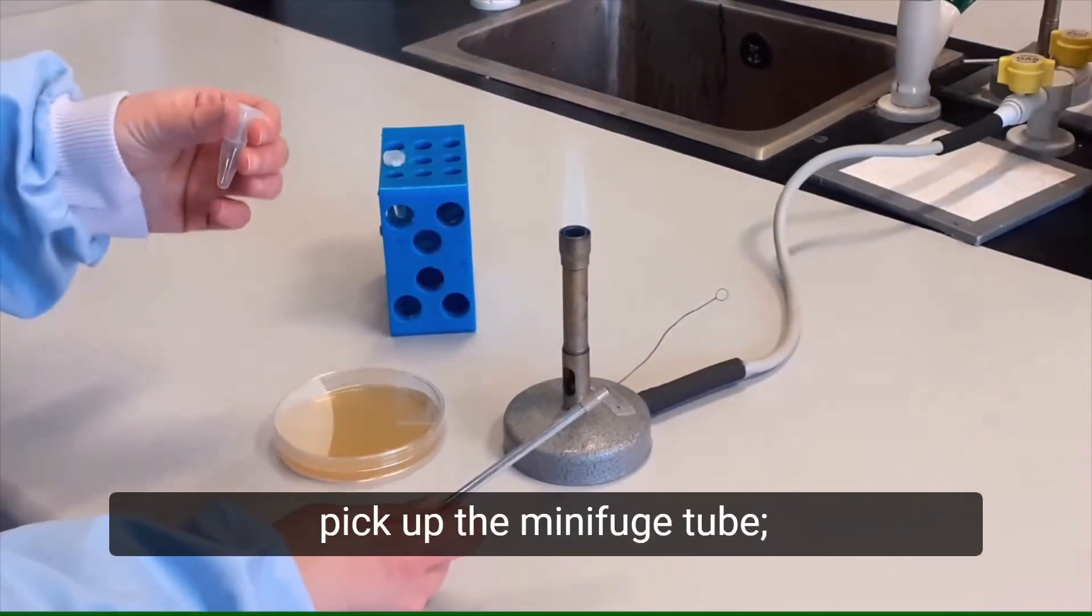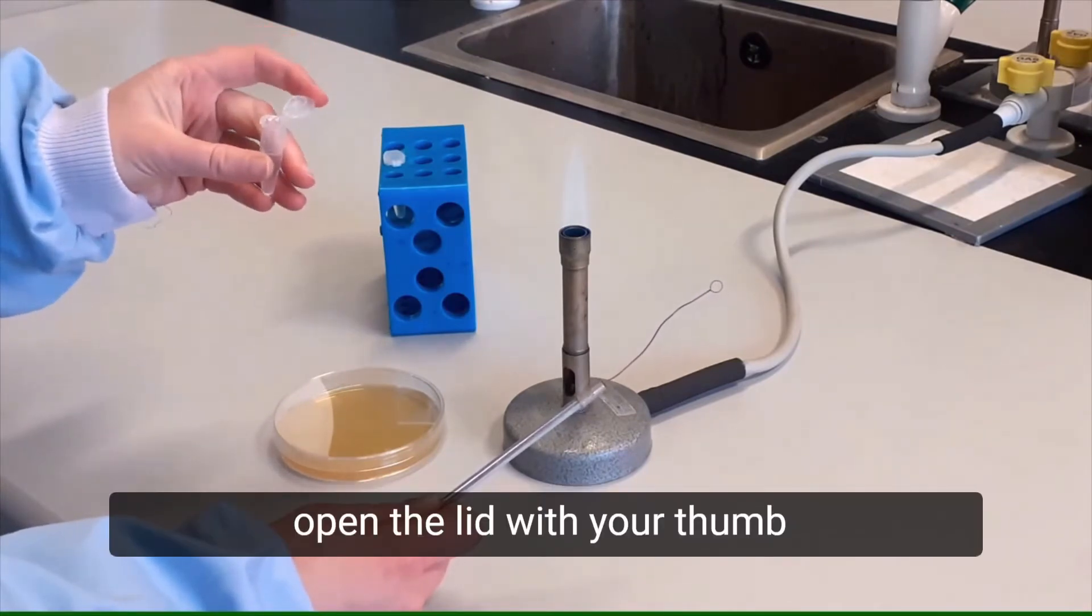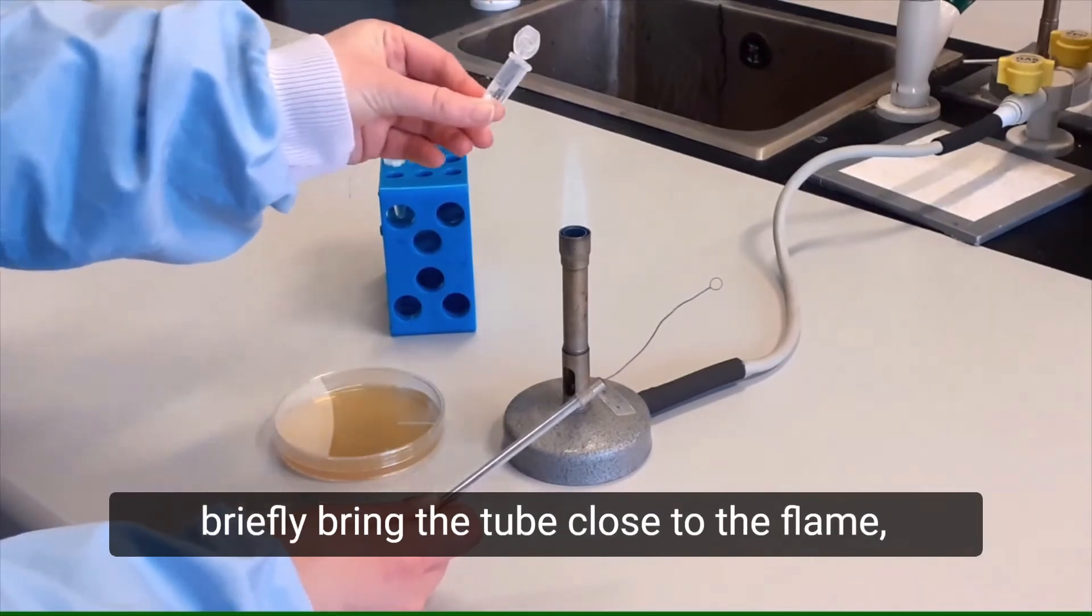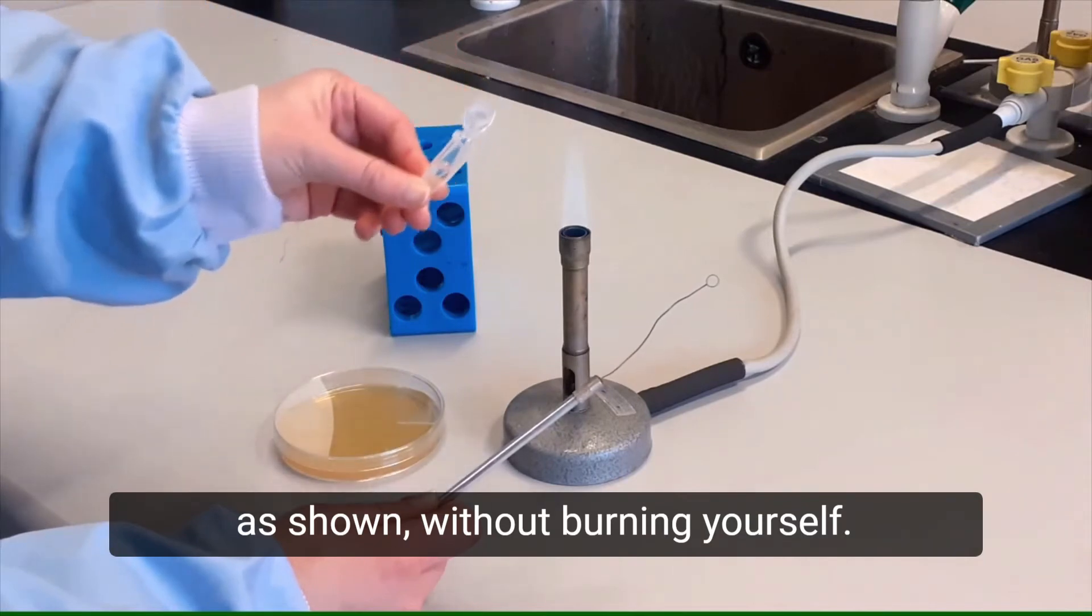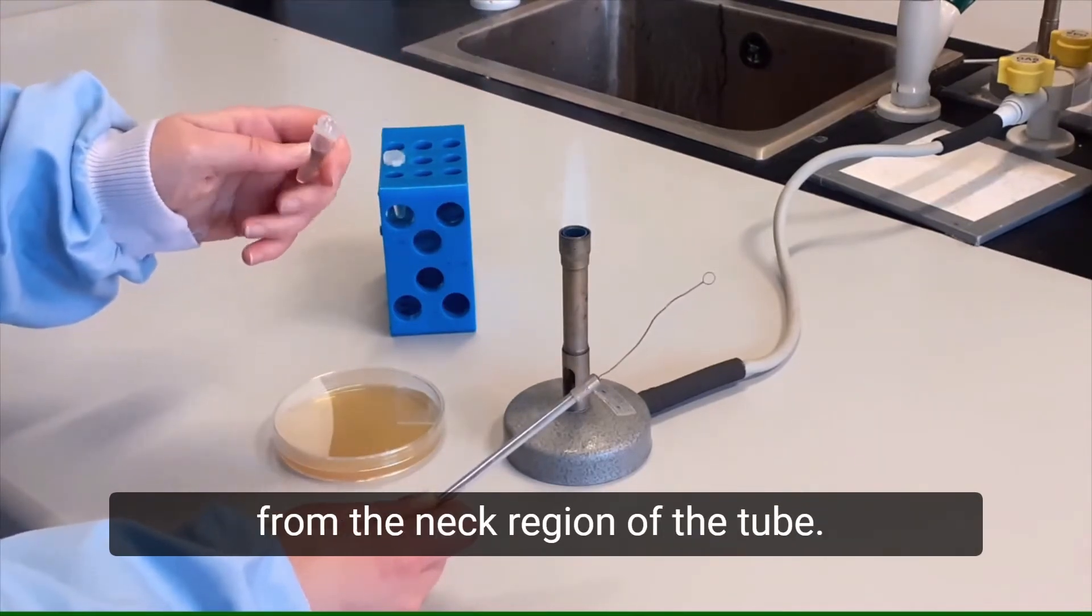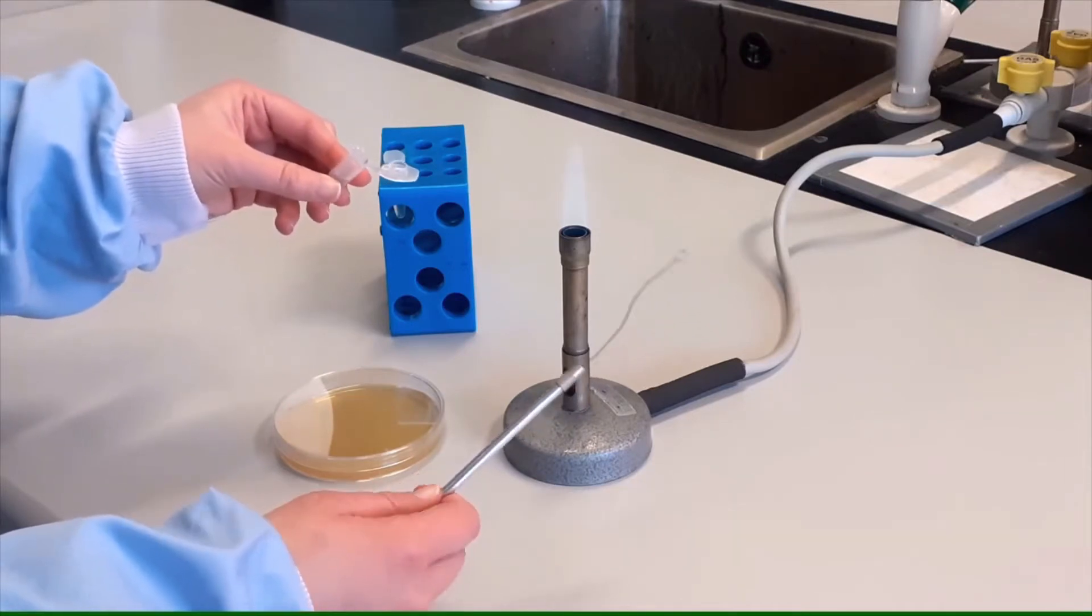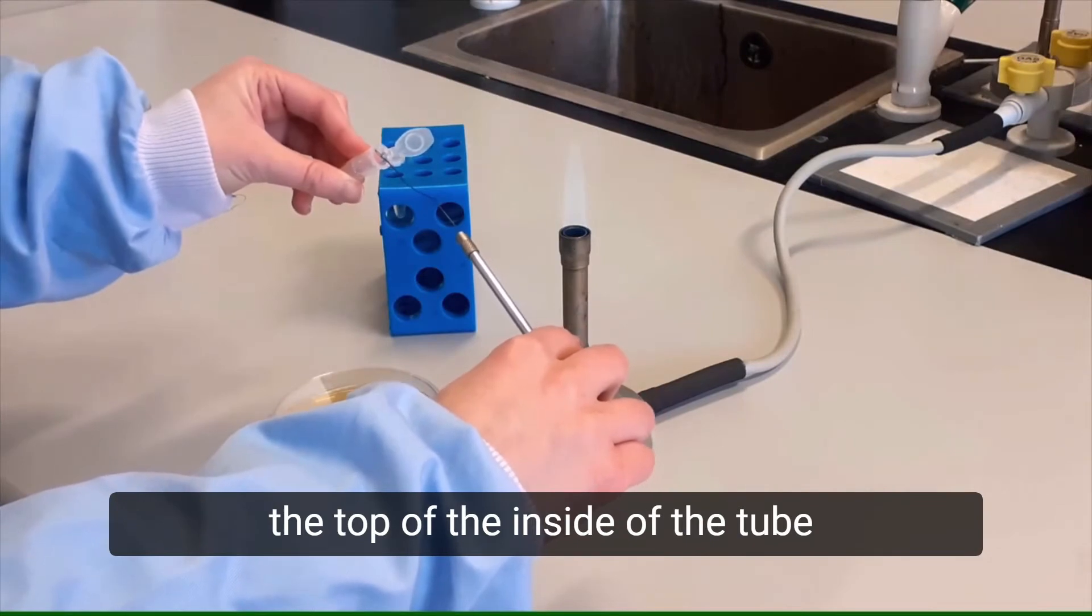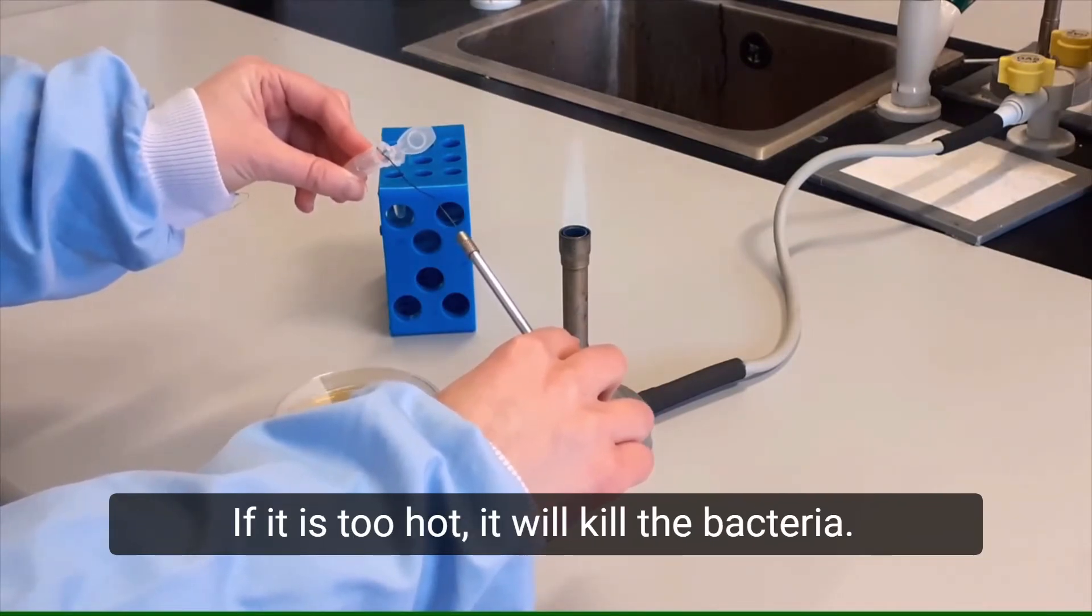With your other hand, pick up the Minifuge tube. Open the lid with your thumb and holding the tube at its base, briefly bring the tube close to the flame, as shown, without burning yourself. The updraft will remove contamination from the neck region of the tube. Do not allow the plastic to melt. Touch the wire loop against the top of the inside of the tube for a few seconds to cool it. If it is too hot, it will kill the bacteria.